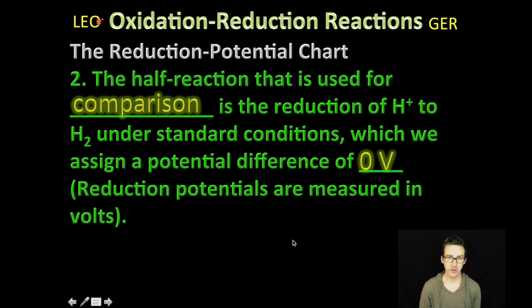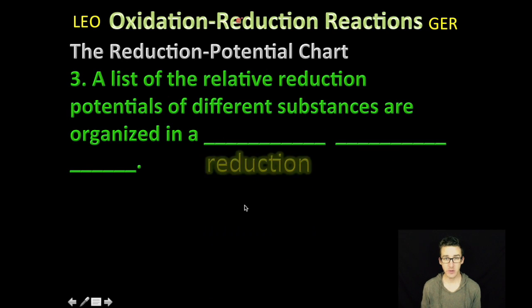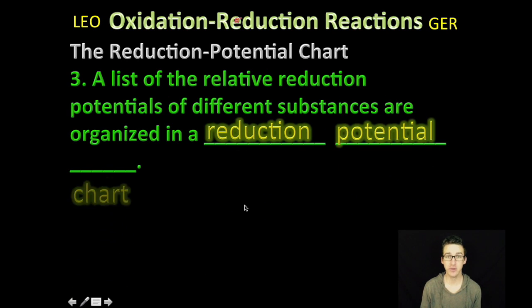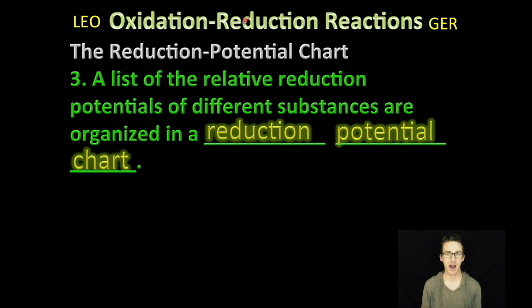And the half reaction that we're going to use for comparison is the reduction of the hydrogen ion to hydrogen gas under standard conditions, which we assign a potential difference of zero volts. So that's our starting point for comparison. And then we just make a list. How do things compare to the reduction potential of hydrogen ion to make hydrogen gas to make a reduction potential chart?